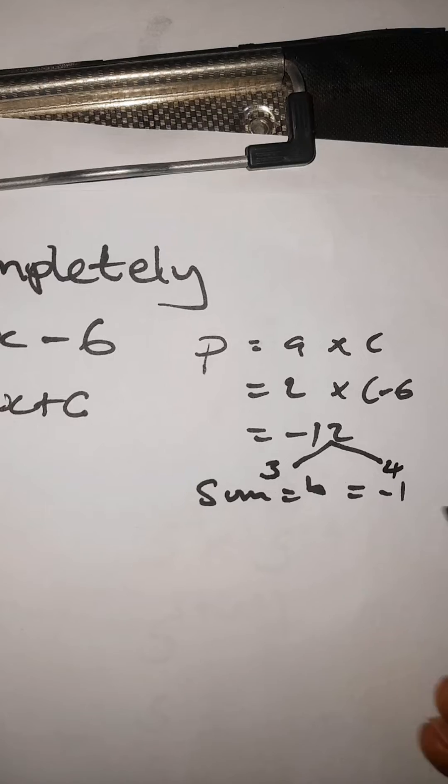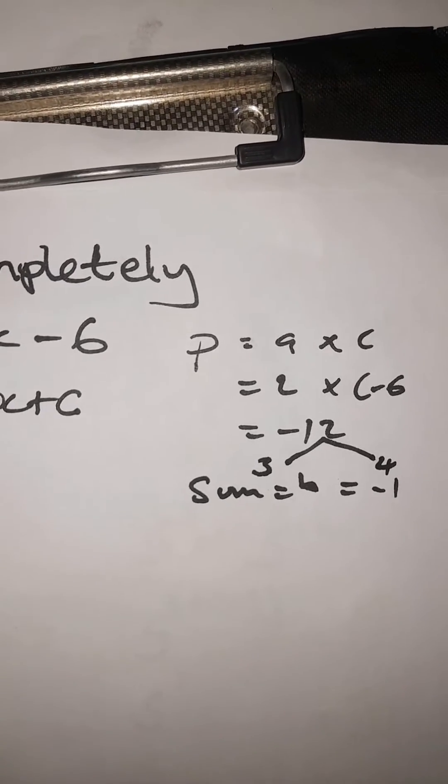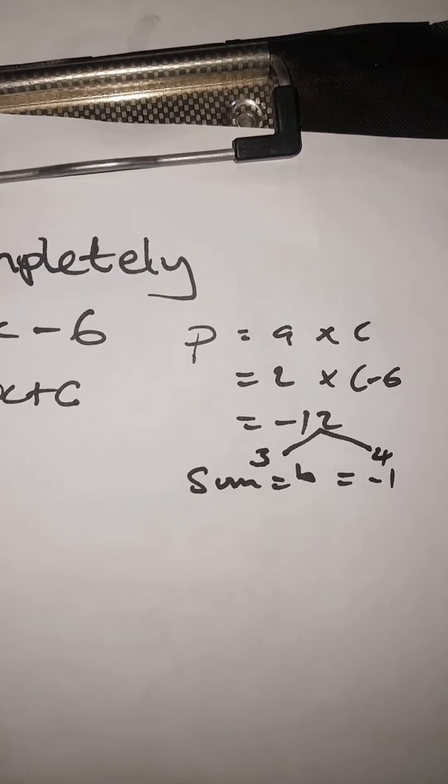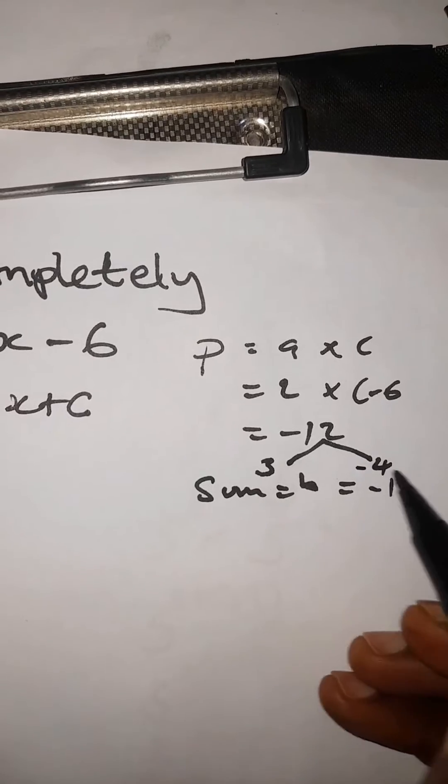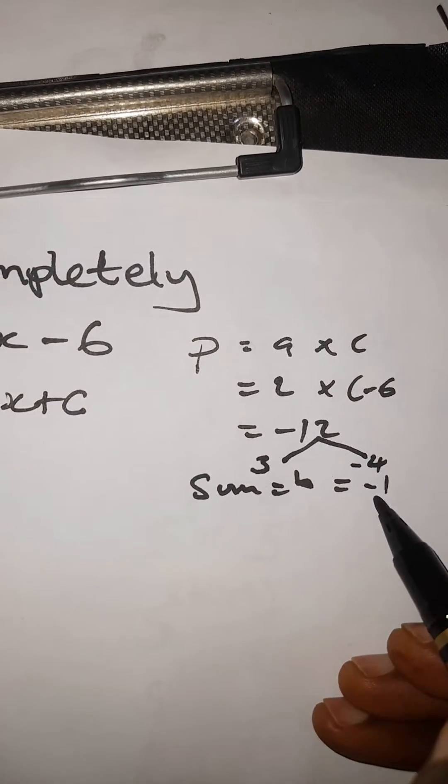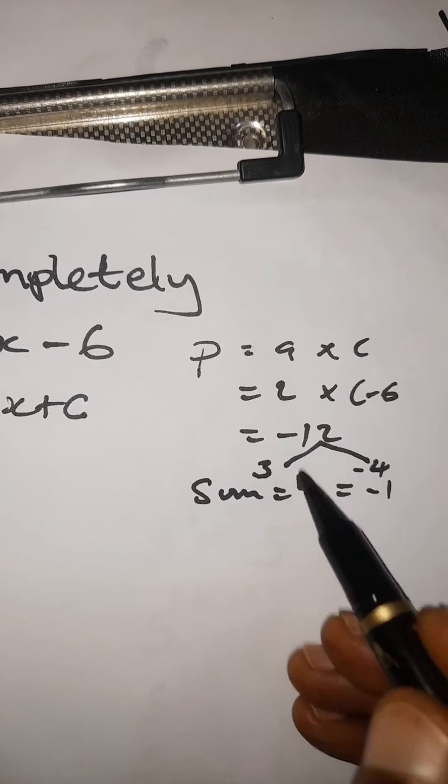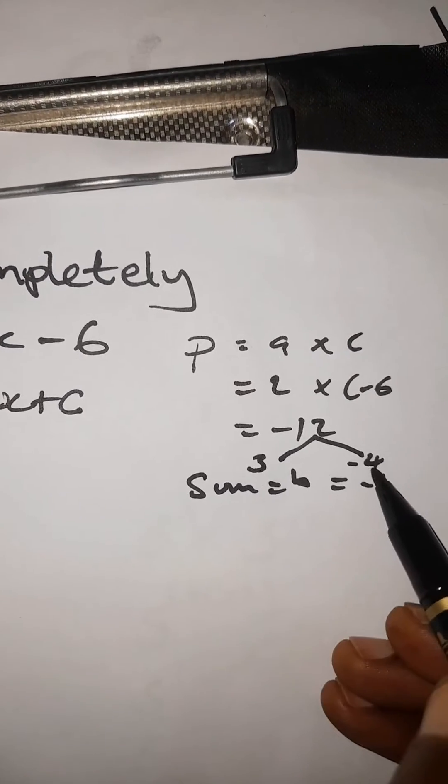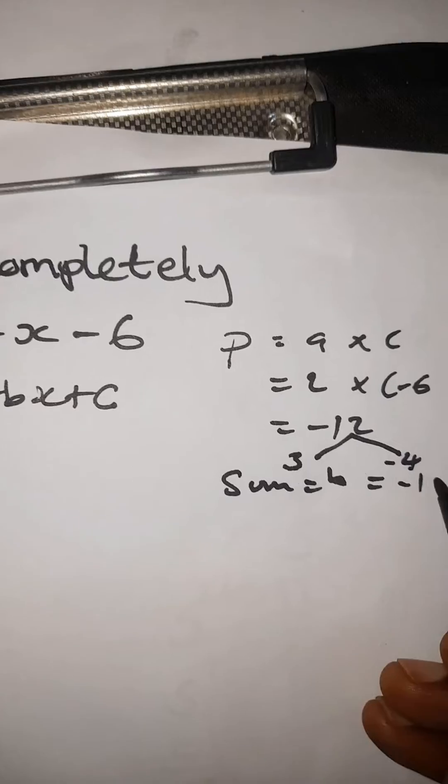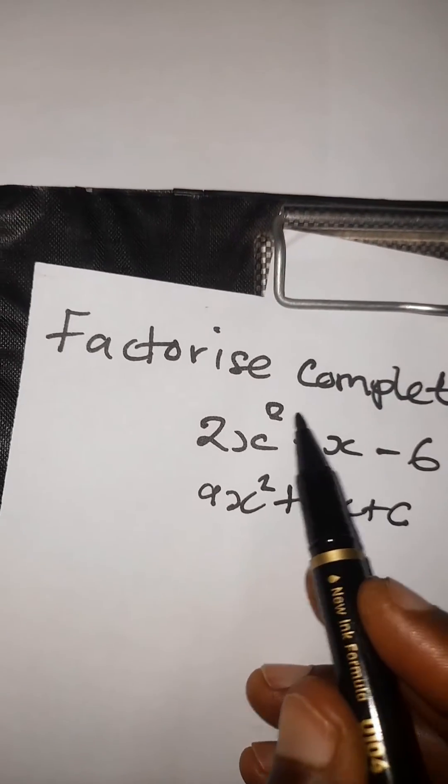Let's think of 3 and 4, because 3 times 4 is 12. The larger one should be negative because when you add them, the answer is negative. 3 times negative 4 is negative 12, and 3 plus negative 4 is negative 1. These are the factors we're going to use to split this b.